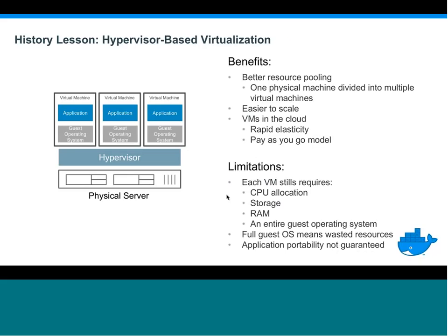Then came virtualization, which really boomed in the 2000s. The fundamental benefit is allowing you to divide a physical server's resources into individual isolated virtual machines. Each virtual machine doesn't see itself as sharing resources — it thinks it owns the entire server. Each VM has its own guest operating system as well as its application. The immediate benefits include better resource pooling, going from a one-to-one ratio to eight-to-one or ten-to-one, driving rapid adoption of virtualization.